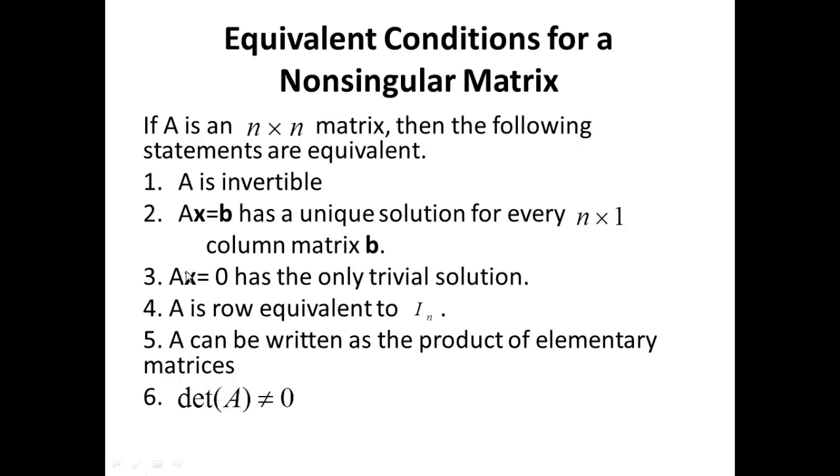Look at the third one. A x equals zero, that is the homogeneous system, has only the trivial solution. Of course, if A inverse exists, then multiplying both sides by A inverse, I'm left with X equals A inverse times zero, which is zero. So only the trivial solution.